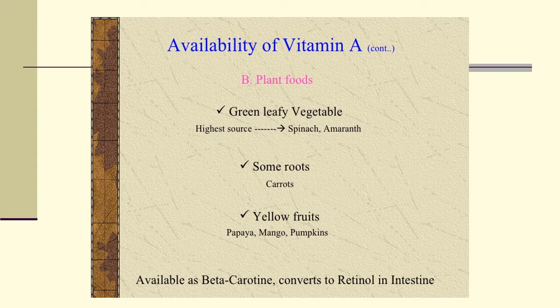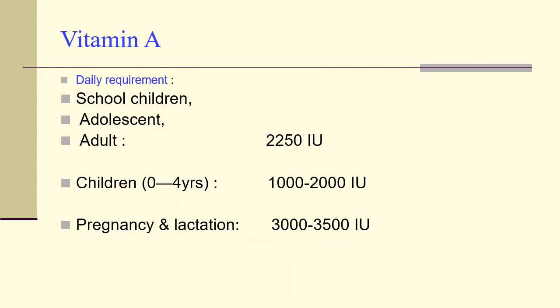Vitamin A is available through plant foods — as you learned in school, green leafy vegetables have abundant vitamin A. The highest sources are spinach and amaranth, then some roots like carrots, yellow fruits like papaya, mango, and pumpkins. Vitamin A from plants is available as beta-carotene, which converts to retinol in the intestine. Daily requirement for school children, adolescents, and adults is 2,250 IU. For children aged 0–4 years it is 1,000–2,000 IU. In pregnancy and lactation it is 3,000–3,500 IU.